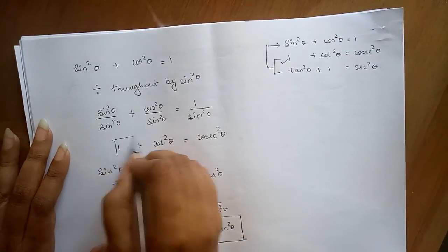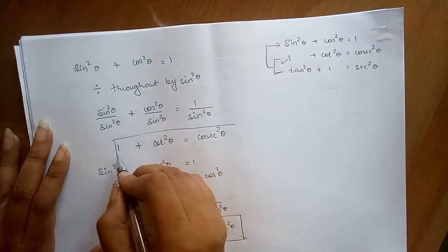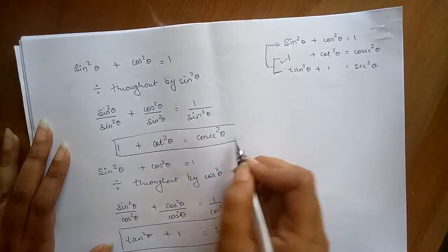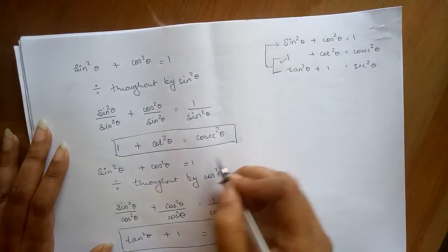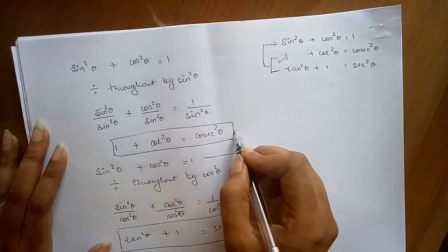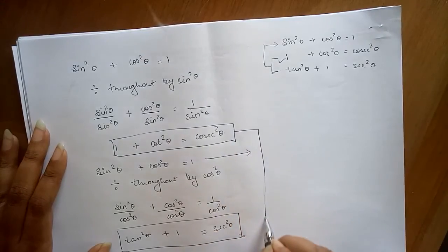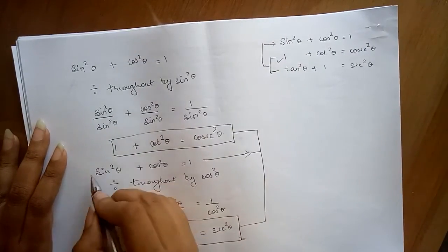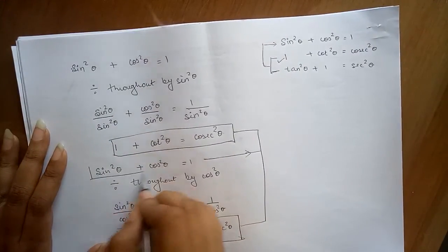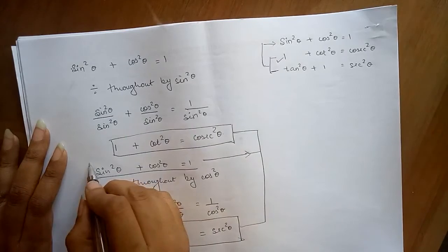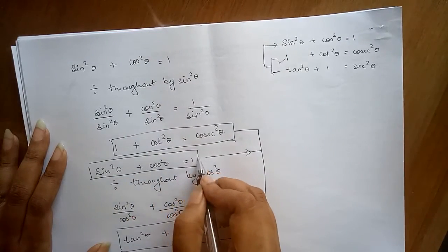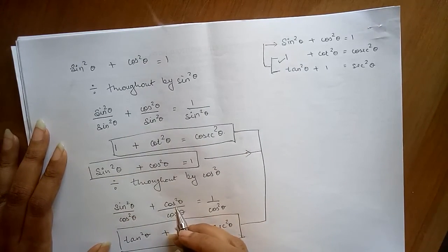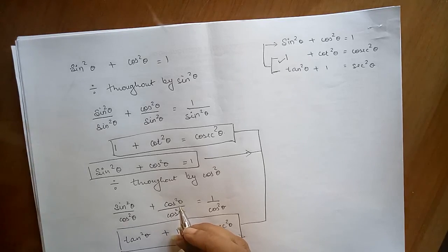Now you've realized that you can derive the other two identity formulas by just remembering our basic formula, sin²θ + cos²θ = 1. If you like this video, please like and subscribe to my channel. Thank you so much.